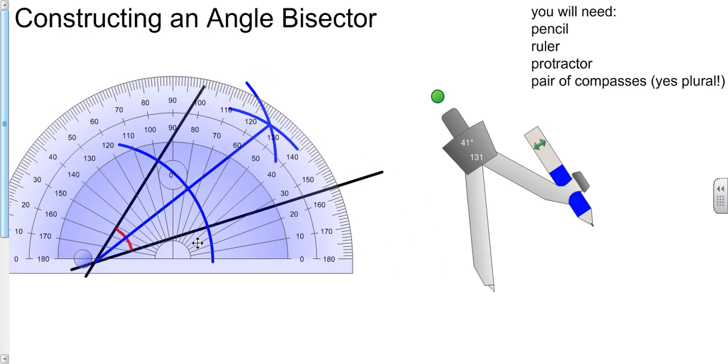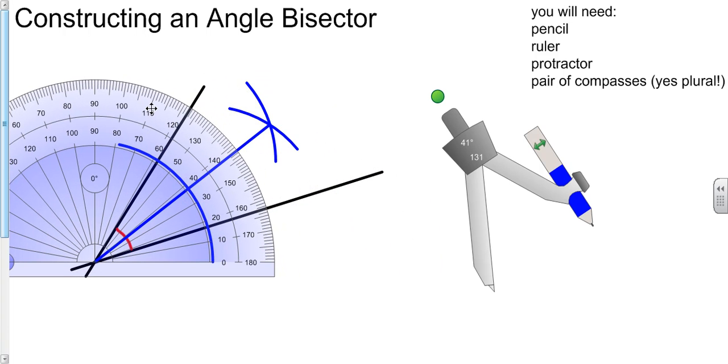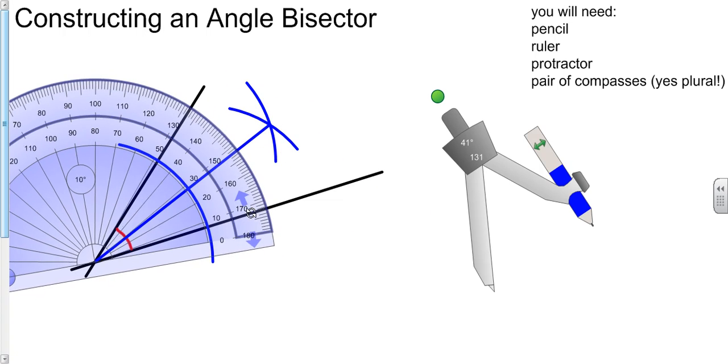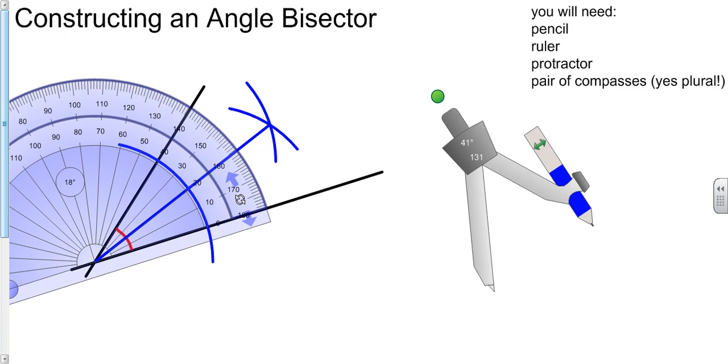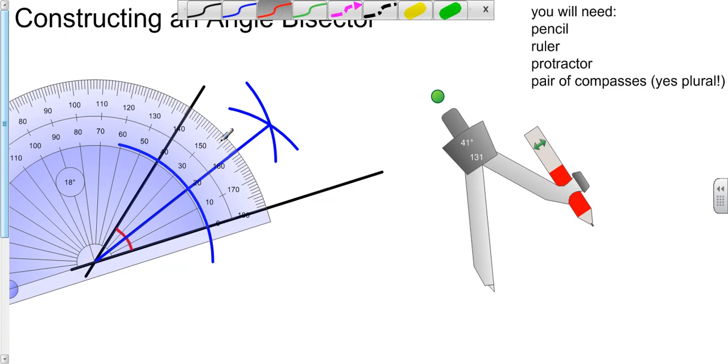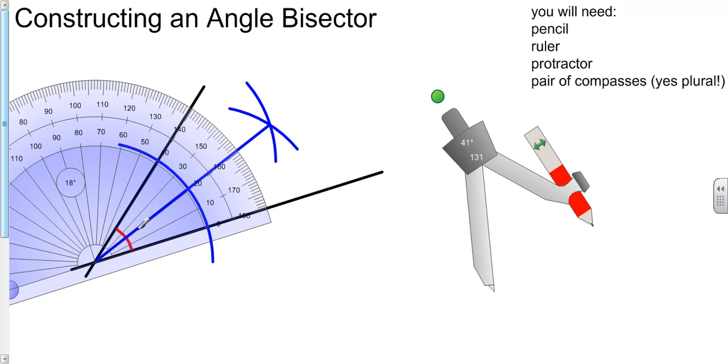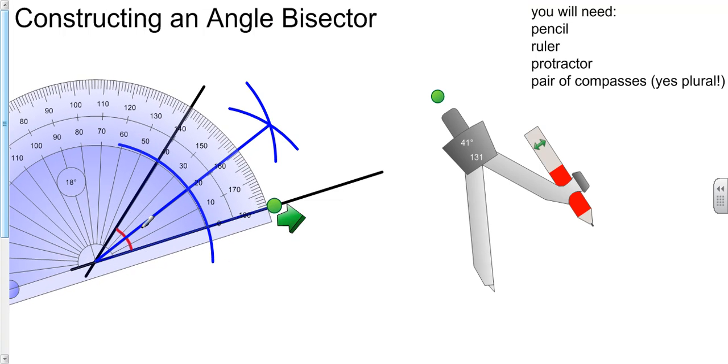I'll take my protractor, put it on the point they join, and line up one of my lines with zero. You should see that this angle here appears to be 20 degrees, and the whole thing is 40. So what we have done, we have indeed created an angle bisector.